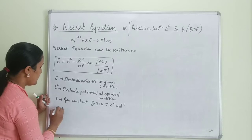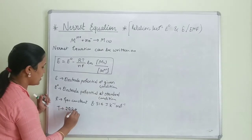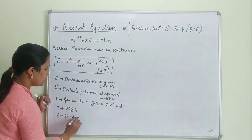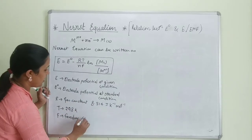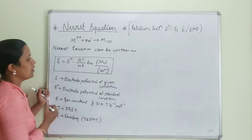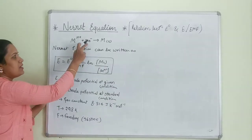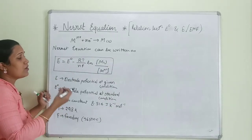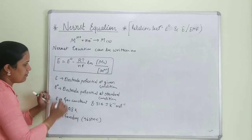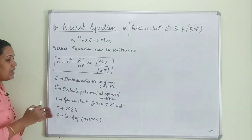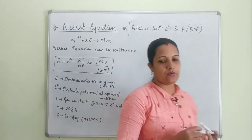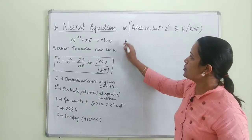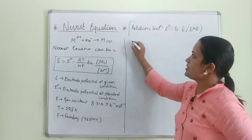F is Faraday's constant, which we will also study in this chapter — its value is 96,500 coulombs. And n represents the number of electrons involved in the reduction or oxidation process. Now let's put all these values into the equation and see what simplified form we get.